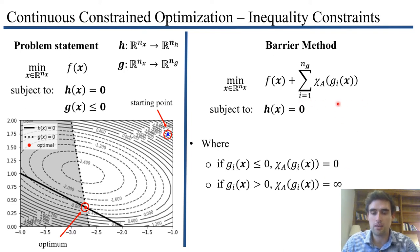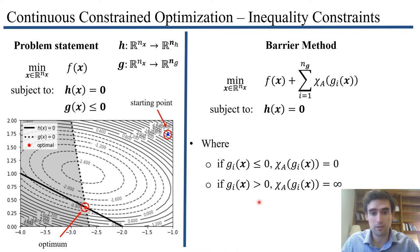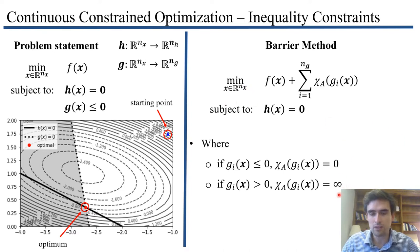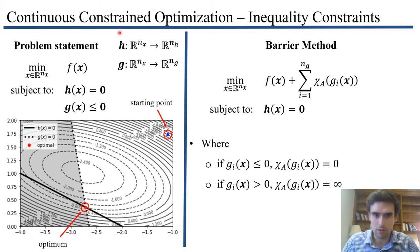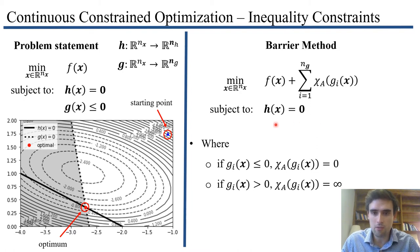This function xi takes as arguments my inequality constraints. If my inequality constraints are satisfied, xi returns zero — so it doesn't add or subtract anything to the objective function value, because we're happy with it. If the inequality constraints are not satisfied, then xi returns positive infinity. And because we want to minimize, infinity is the worst objective function value, so we avoid it.